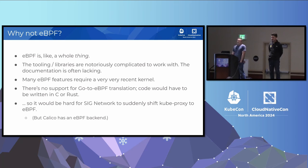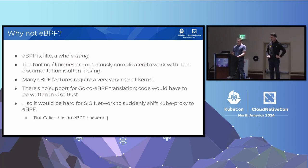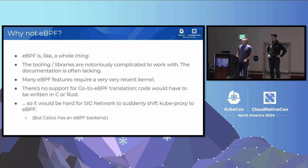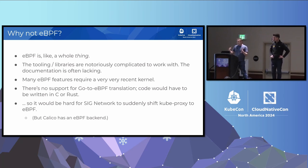eBPF is just a lot to deal with. The tooling is very hard to use, the documentation is mostly lacking, you often need a very new kernel, and you have to provide backward compatibility implementations. There's no support for Go-to-eBPF translation, which means if we were going to use eBPF in KubeProxy we'd have to write it in C or Rust or something else. For SIG Network, it would just be too difficult — suddenly requiring the existing team to know all this eBPF stuff. That doesn't mean everybody should avoid it; Calico actually has an eBPF backend, but it didn't make sense for SIG Network and KubeProxy.